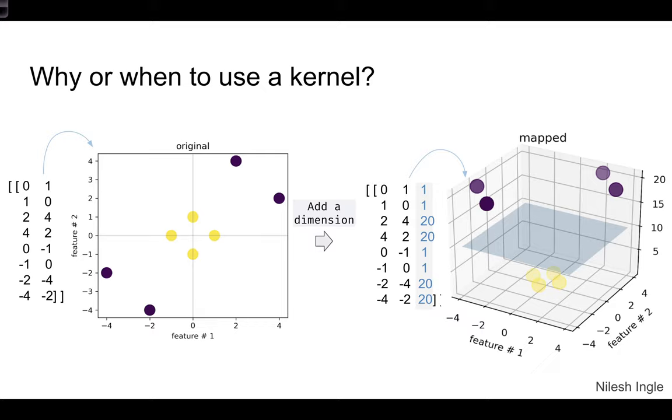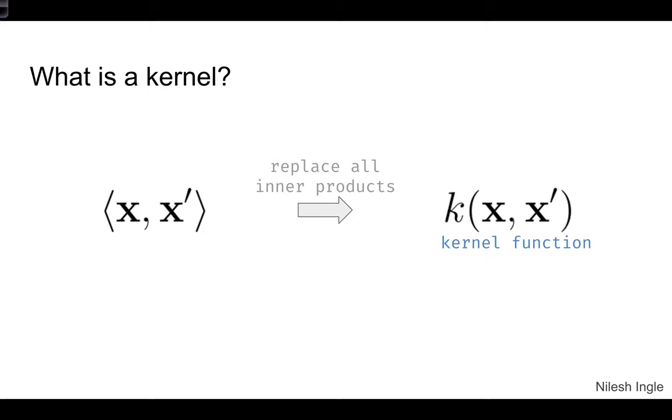Now a kernel, mathematically speaking, what you are actually trying to do is replacing all inner products such as shown here, which are related to x and x transpose, by this function k for kernel, and then x and x transpose.